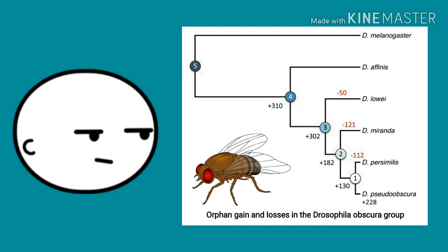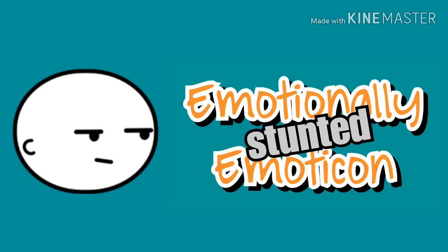My questions are: first, if orphan genes are an indication that species or groups of organisms are not related, why do we find orphan genes in organisms that can interbreed with other organisms that do not share those orphan genes — for example, in Drosophila? And the second question would be: if this is allowed in creationism, whereby even though orphan genes supposedly indicate organisms are not related, yet we have related organisms not sharing orphan genes, how is this now a problem for evolution? Those are the two questions I had in regards to orphan genes.